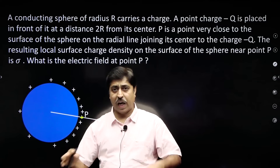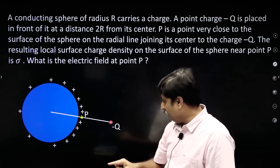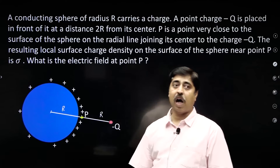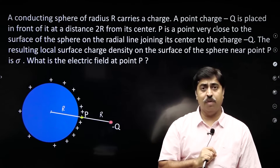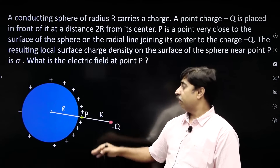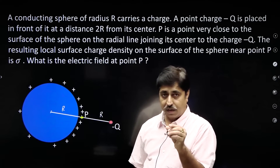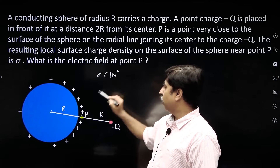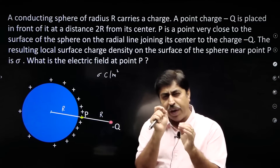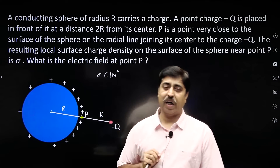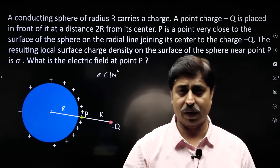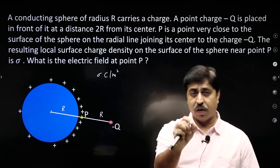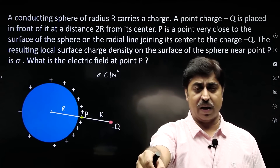There is a conducting sphere carrying some charge. You bring a point charge minus q and keep it at a distance of 2r from the centre, so the radius is r and from the surface this charge is at a distance r. The resulting local surface charge density on the surface of the sphere near point P is sigma coulombs per square meter. What is the net electric field at point P? That is your question.